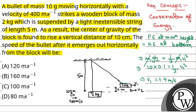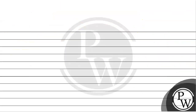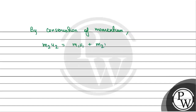V1 is the velocity of the wooden block after the collision and V2 is the final velocity of the bullet. Now we will apply conservation of momentum: M2 times U2 equals M1 times V1 plus M2 times V2.